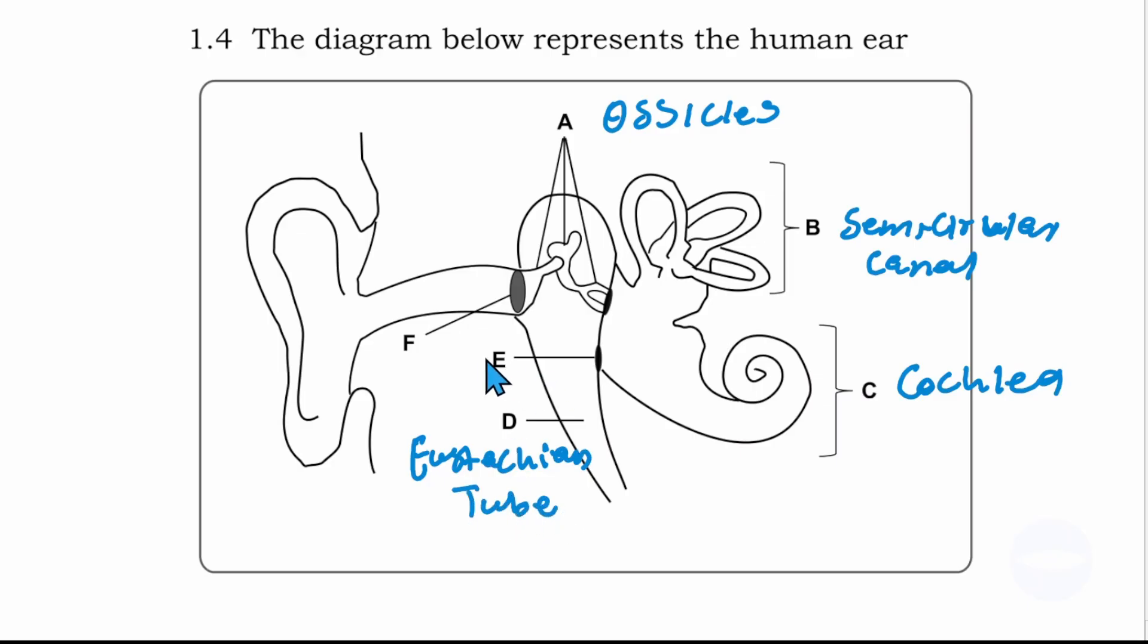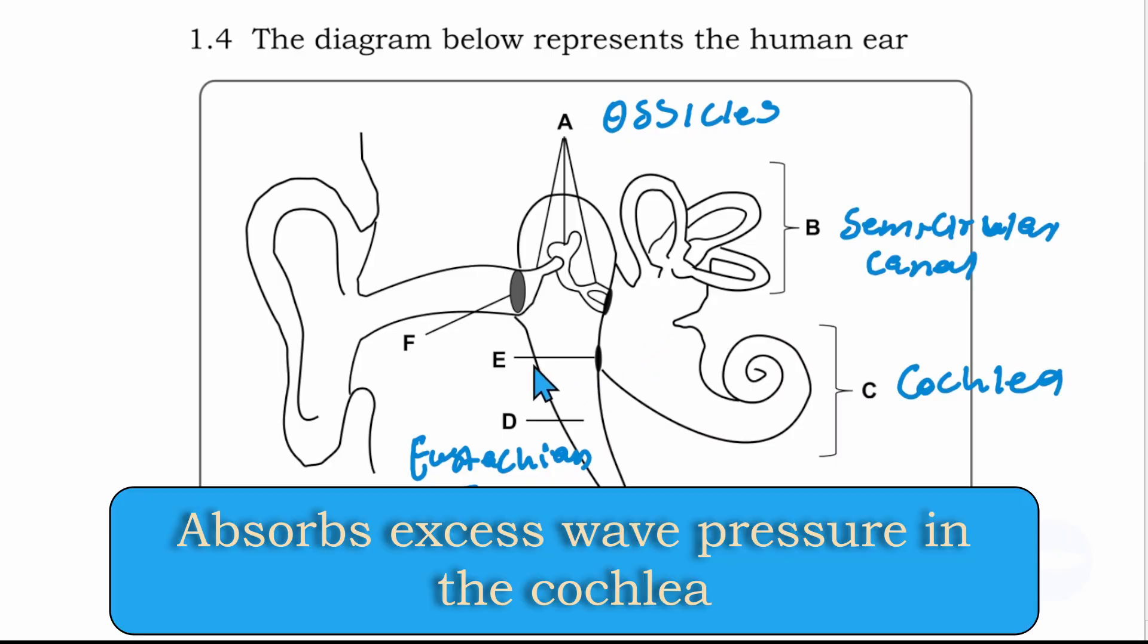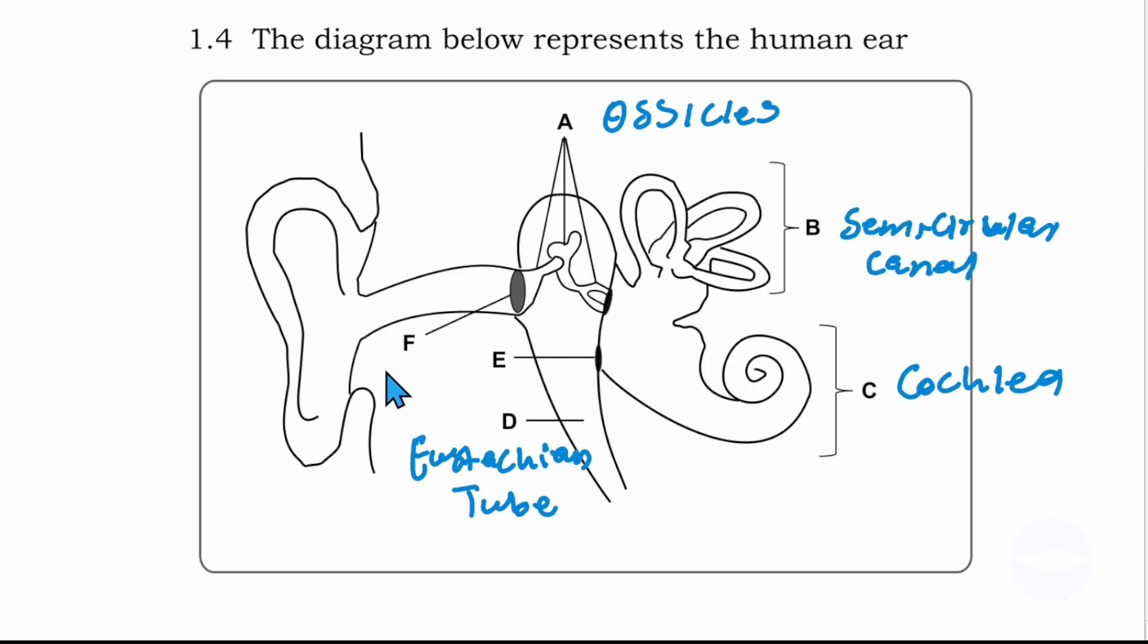Number E is the round window. If there is excess wave pressure in the cochlea, then the round window will absorb it. This is the round window.